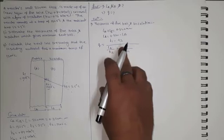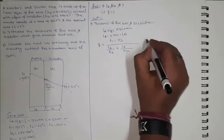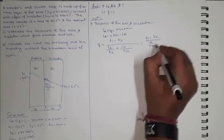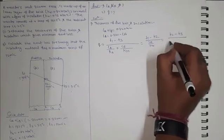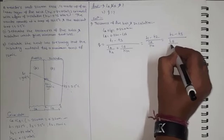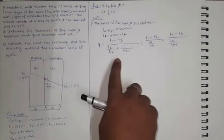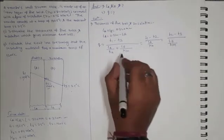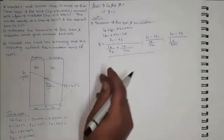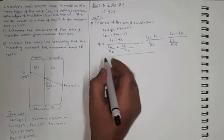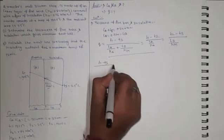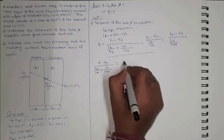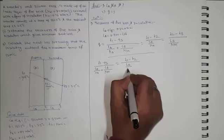We can also split this equation: (T1 − T2) / (LA / K_B) equals (T2 − T3) / (LB / K_insulation). Using these two equal expressions, we consider both equations to calculate the thickness of fire brick as well as insulation. From these two, we equate: (T1 − T3) / (LA/K_B + LB/K_insulation) = (T1 − T2) / (LA/K_B).